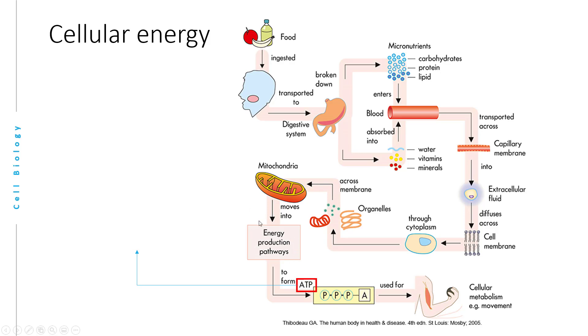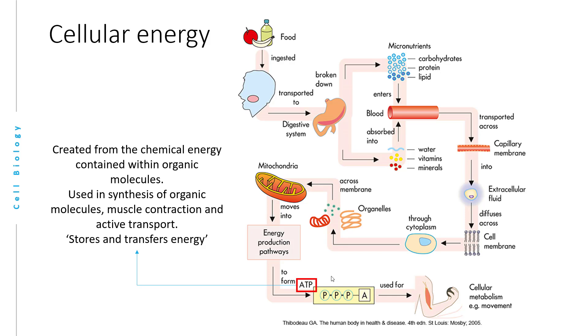This energy is captured in the form of a molecule called ATP or adenosine triphosphate. This energy can be used to power all functions that require energy in the cell. For example, in muscle cells, ATP is used for contraction. In a nutshell, ATP is created from the chemical energy contained within organic molecules. It is used in the synthesis of organic molecules, muscle contraction, active transport, and so on. Basically, ATP stores and transfers energy.